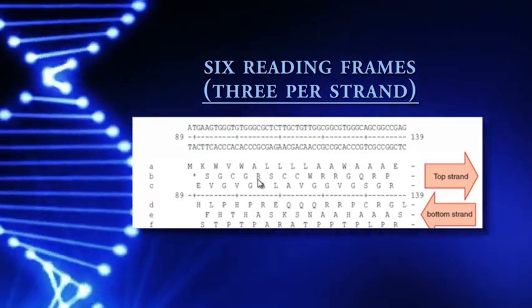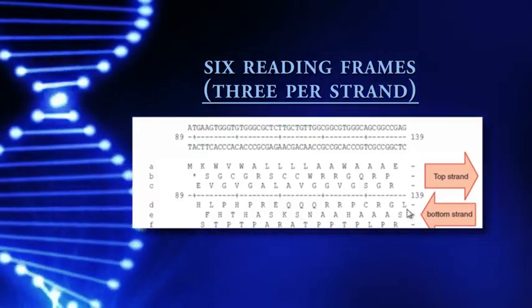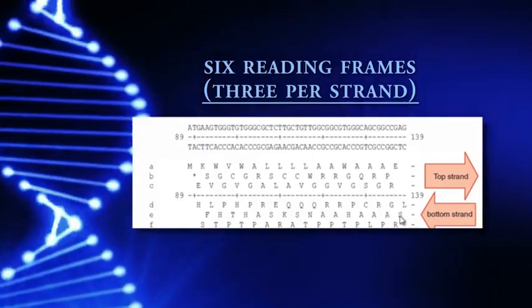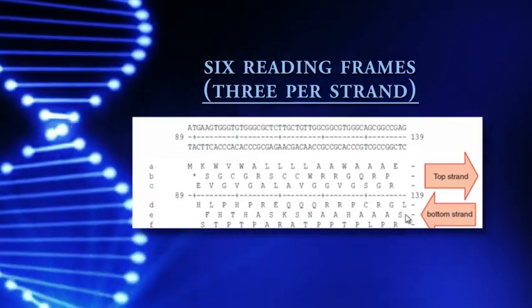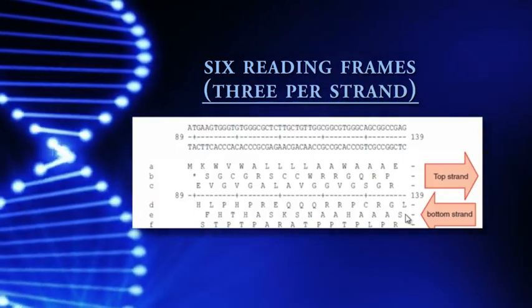Likewise, now on the bottom strand, now we are reading right to left. Strand D would be L, G, R, C, and then S, A, A, A on line E. There are six different places to start a reading frame to start a coding region.